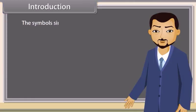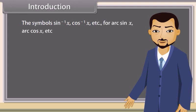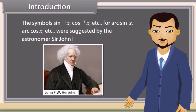The symbols sin⁻¹x, cos⁻¹x, etc., for arc sin x, arc cos x, etc., were suggested by the astronomer Sir John F. W. Herschel in 1813. Now, let's learn about inverse trigonometric functions.